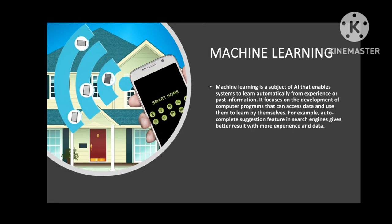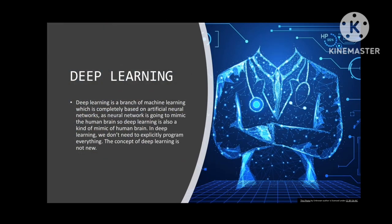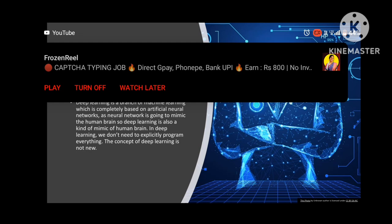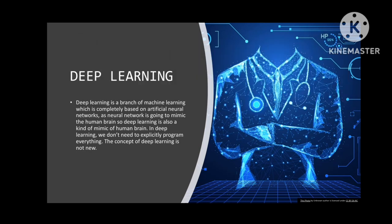The second field is deep learning. Deep learning is a branch of machine learning which is completely based on artificial neural networks. As neural networks aim to imitate the human brain, deep learning is also a kind of simulation of the human brain. In deep learning, we do not need to explicitly program anything — everything is learned automatically. The concept of deep learning is not new.